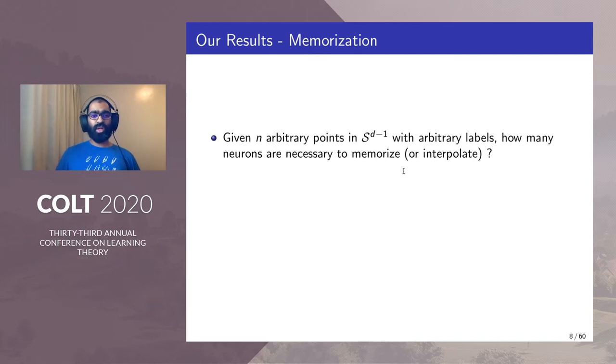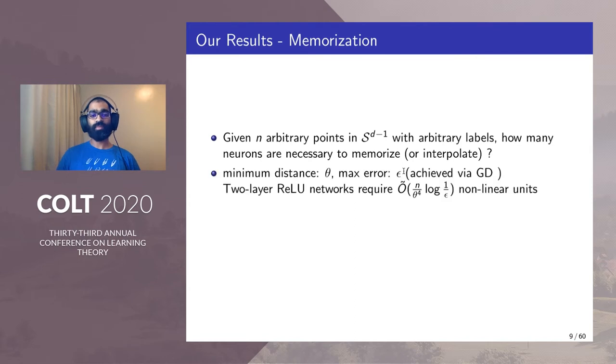The problem setup is summarized as follows. Given n arbitrary points on the sphere in d dimensions with arbitrary labels, how many neurons are necessary to memorize or interpolate these data points? We assume that the minimum distance between two points is θ, and the maximum error we can tolerate is ε.